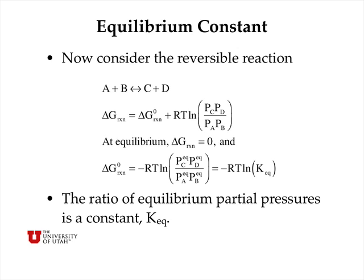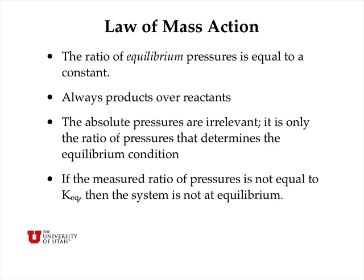At equilibrium, delta G for the reaction equals zero, so we can rearrange to say that delta G°, which is a constant we can look up in a table, equals minus RT log of the ratio of partial pressures at equilibrium conditions. Because all of this equals a constant, we rewrite that as minus RT log of K, where K is the ratio of equilibrium partial pressures. This ratio is always structured as partial pressures of products divided by partial pressures of reactants — or concentrations for solutes. It is the ratio of thermodynamic activities, not the absolute pressures, that determines the equilibrium condition.